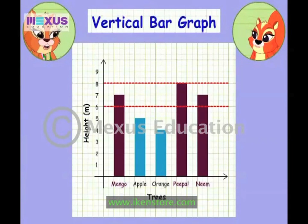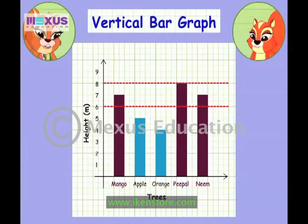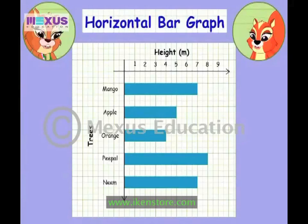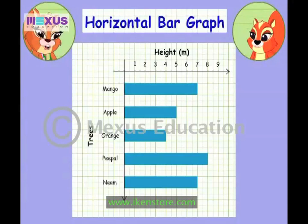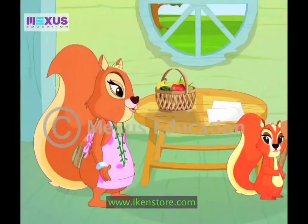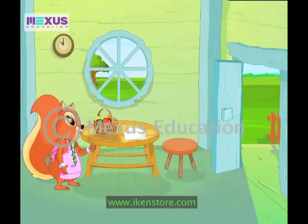That was brilliant, Mom! Instead of a vertical bar graph, we can also draw the same graph horizontally. This is known as a horizontal bar graph. The way of making this graph is the same, but here, instead of drawing the height, we draw the width. Thanks, Mom — you're the best. I'm off now. But wait, where are you going? To find a mango or neem tree so I can climb it!